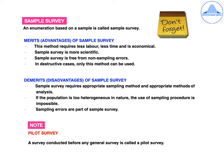The sample survey is an enumeration based on a sample. Merits: requires less labour, less time, is economical, more scientific, free from non-sampling errors, and in destructive cases only this method can be used. Demerits: requires appropriate sampling method and appropriate methods of analysis; if the population is too heterogeneous, the use of sampling procedure is impossible; and sampling errors are part of every sample survey.